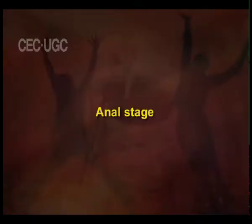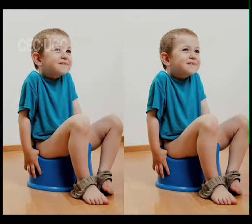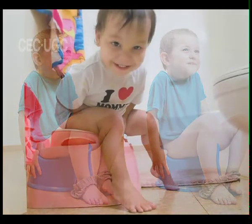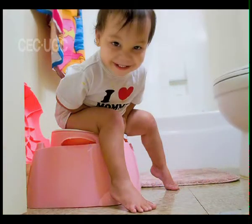In the second to third year, the child is in the anal stage and gets pleasure by the process of retention and expulsion of feces and urine. If toilet training is particularly demanding, it may result in fixation. Adults who are fixated in the anal stage might show unusual rigidity, orderliness and punctuality, or extreme disorderliness or sloppiness.